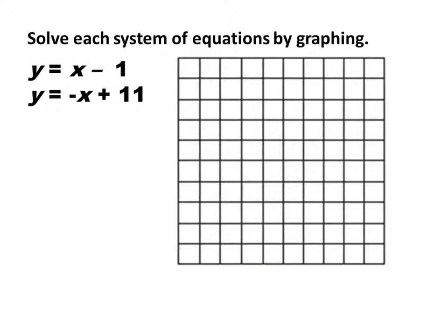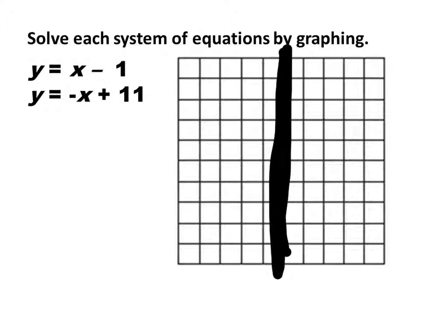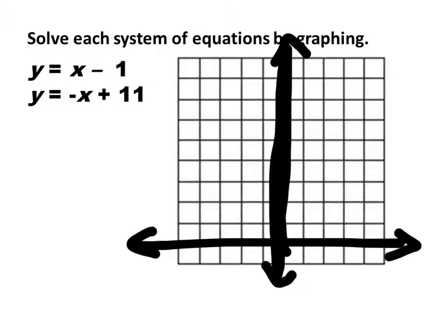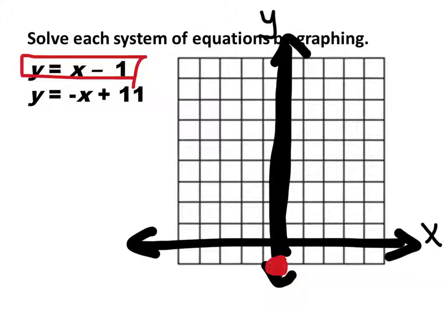Are the slopes the same? No. So we do need to actually solve these. Let's start with our x and y axes. We'll put our point at negative 1 on the y-axis. What's my slope? It's 1 over 1 — a phantom one — so we're going to go up 1 to the right 1, up 1 to the right 1, and so forth. These are not in the book, so you may want to do them on scratch paper.